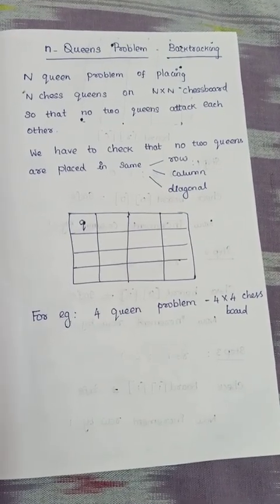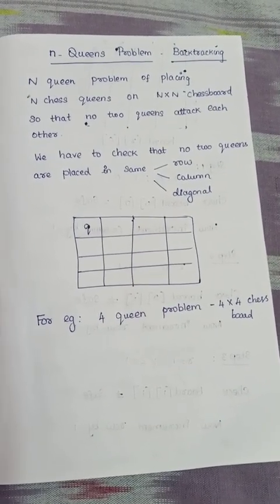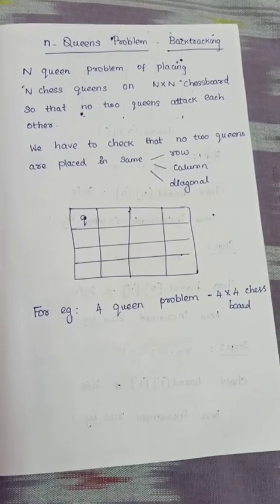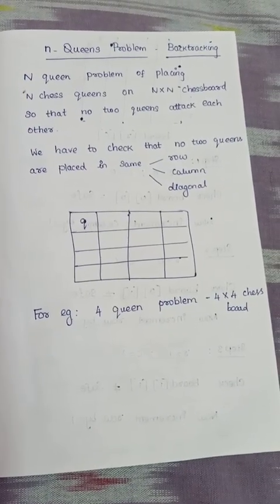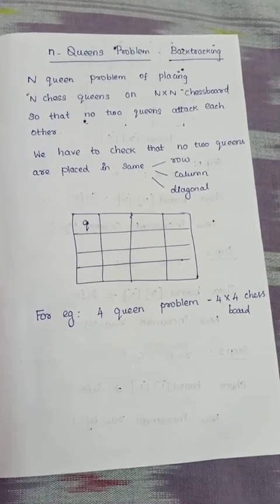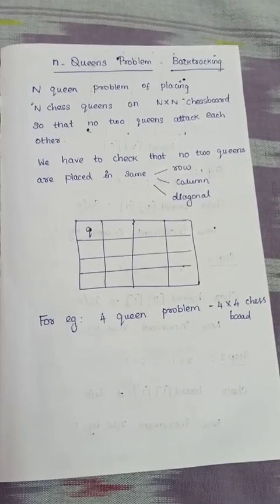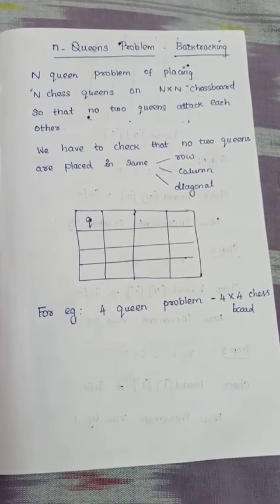Today's topic is the N-Queens problem. This is an application of the backtracking algorithm. It is the first application covered in unit 5.